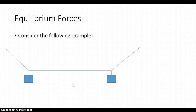Let's divide this system into two parts. Starting with the left side, we have tension in the string, which we'll call tension one, T1. We also have a mass with weight W1 pointing downward in the y direction, and there is tension in the string pulling towards the right. You'll notice that T1 is not pointing directly in the y direction or directly in the x direction, so it has components. We can break T1 into T1y pointing upwards and T1x pointing towards the left.